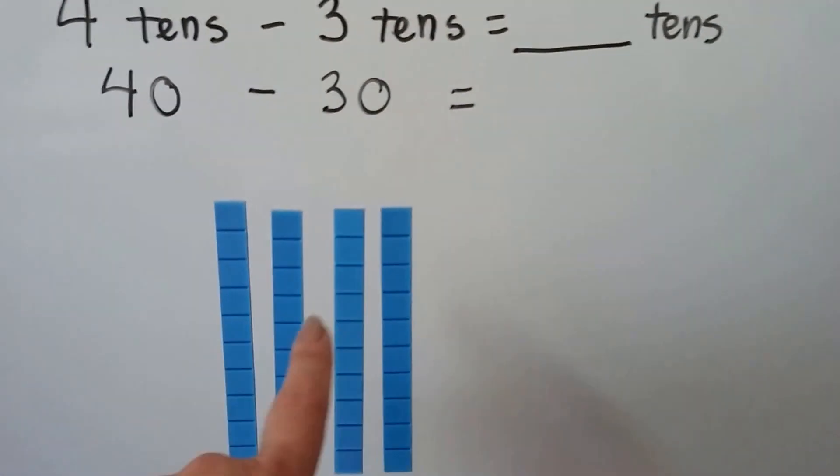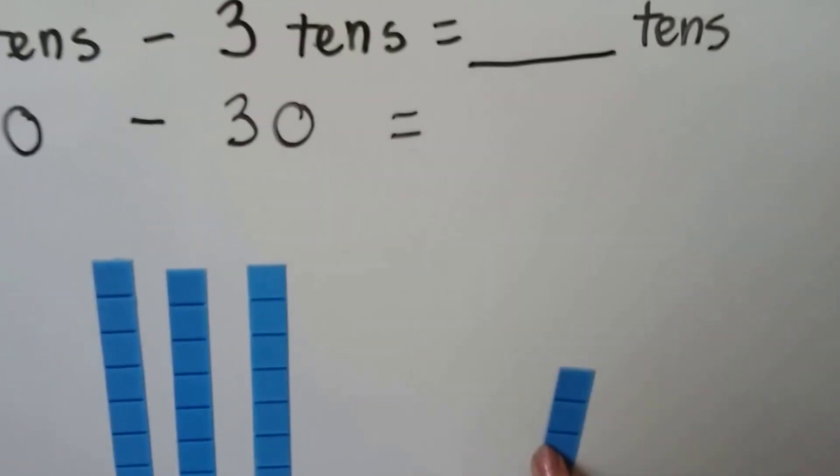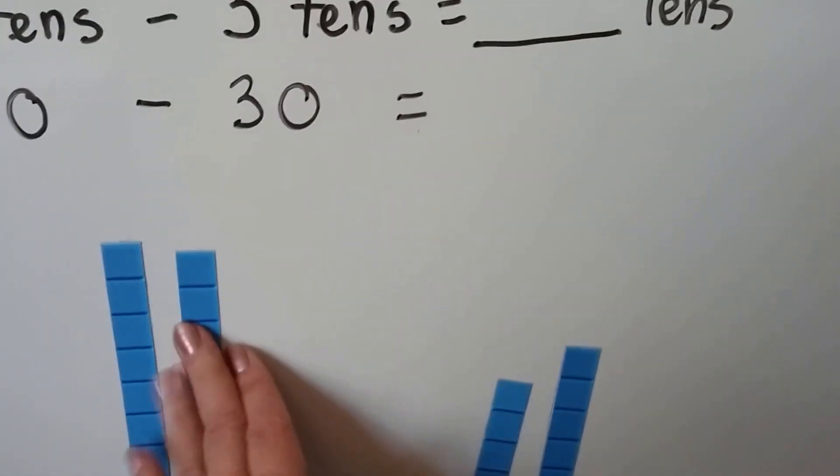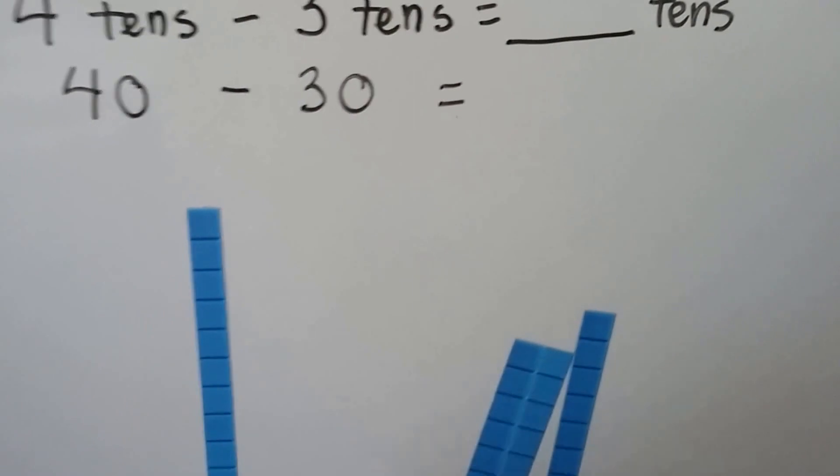If we take three of these tens away, one, two, three, we're only going to have one ten left.